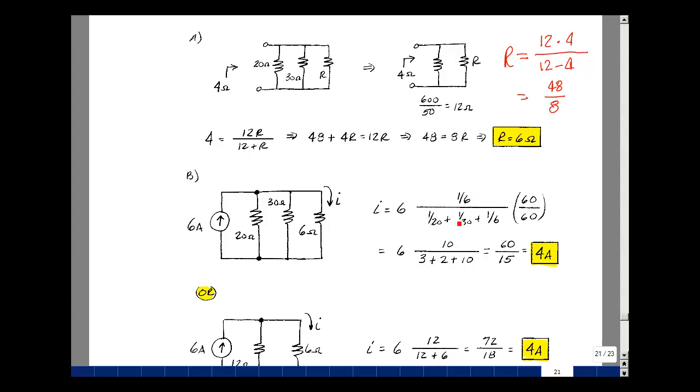So 1 over 20, 1 over 30, and 1 over 6. Let's multiply the numerator and denominator by 60 to get rid of all these reciprocals. So 60 times 1/20 is 3, 60 times 1/30 is 2, 60 times 1/6 is 10. In the numerator same thing 10. So I've got 6 times 10 or 60 divided by 15 and that's 4 amps.